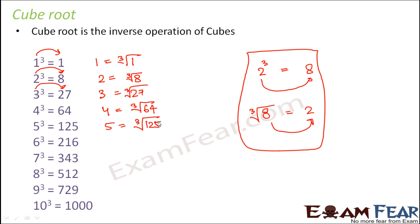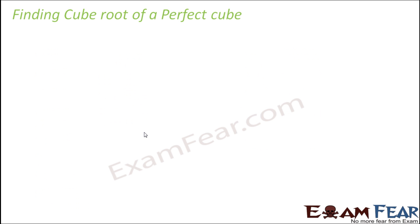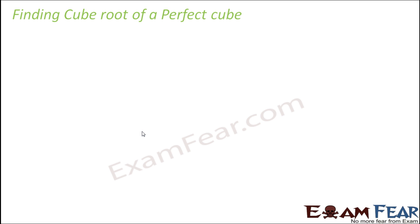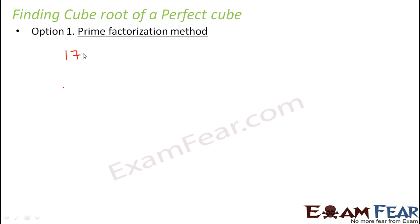This symbol is called cube root and it is read as cube root. Now the question is: how do we find the cube root of a perfect cube? Let us suppose you have the number 175616, quite a big number, and you have to find out its cube root.